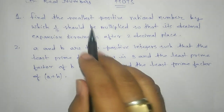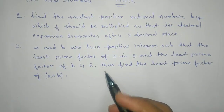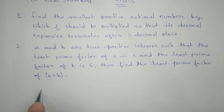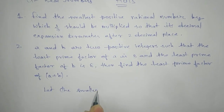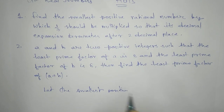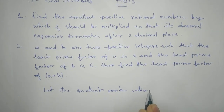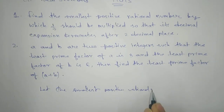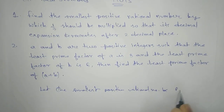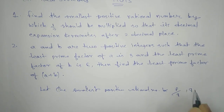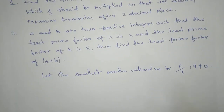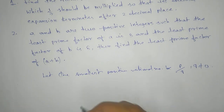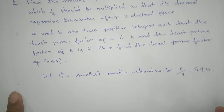They are asking us to find the smallest positive rational number. So our first target: let the smallest positive rational number be p/q, where q is not equal to zero and p, q are natural numbers.